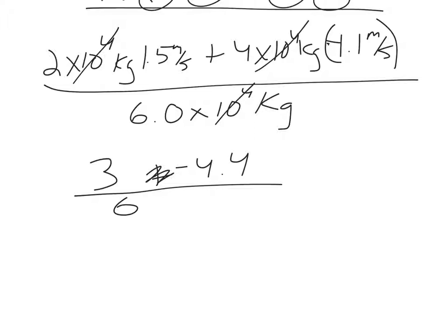3 minus 4.4 is going to be minus 1.4 over 6. I will do that in my calculator, 1.4 over 6, 0.23 repeated. But this is a 2 sig fig problem, so 0.23 meters per second. And it's negative because the negative wins in this case.